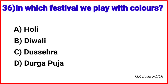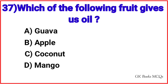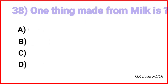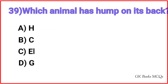Question 36: In which festival do we play with colours? Correct answer is option A, Holi. Question 37: Which of the following fruit gives us oil? Correct answer is option C, Coconut. Question 38: One thing made from milk is? Correct answer is option A, Ghee.